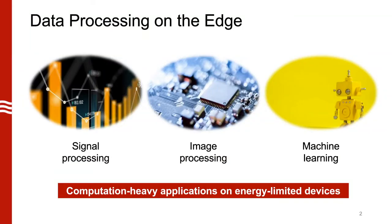As applications move to the edge — for example, health monitoring on an iWatch or image filtering on a GoPro — many of these devices are heavily energy limited. So techniques we may have applied on larger computing systems may not actually work. When we talk about signal processing, machine learning, or image processing, a lot of these applications are very robust to errors. As a result, we can use that robustness to reduce energy consumption on these devices.